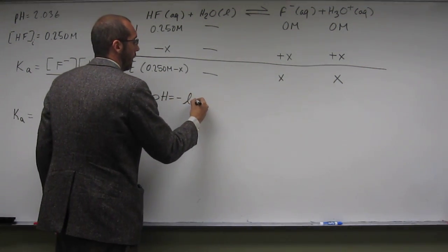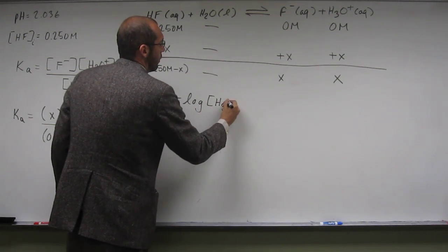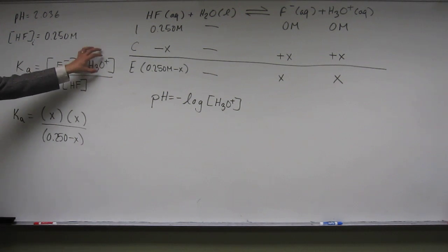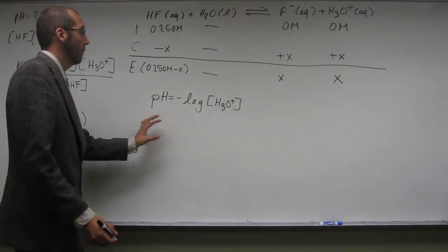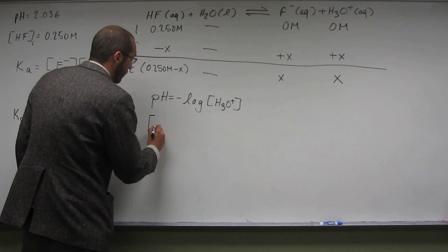pH is the negative log of the concentration of hydronium ion. So what are we looking for? Well, one of the things we're looking for is the concentration of hydronium ion, and it happens to equal X. So it would be really nice to figure out what is that concentration?